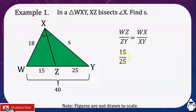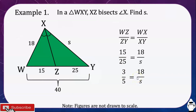By substitution, WZ is 15 and ZY is 25, so 15 over 25 equals WX (18) over XY (S). Simplifying 15 over 25 to lowest terms gives 3 over 5 equals 18 over S. Using cross multiplication, 3 times S equals 18 times 5, so 3S equals 90. Dividing both sides by 3, S is equal to 30.